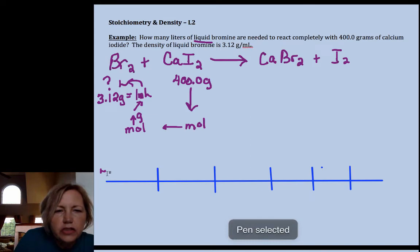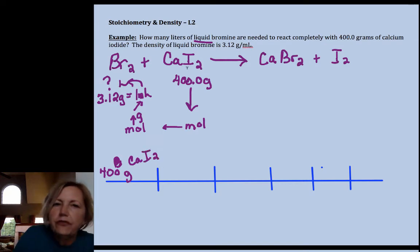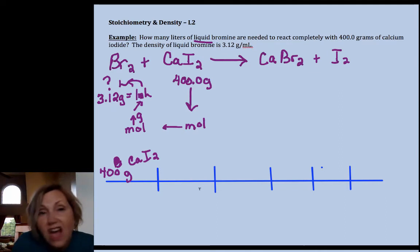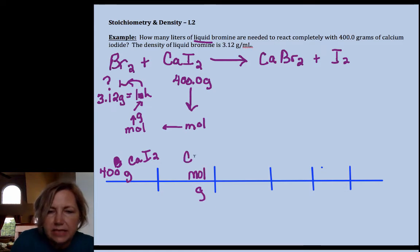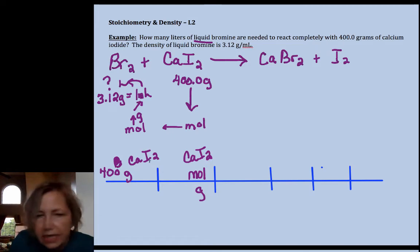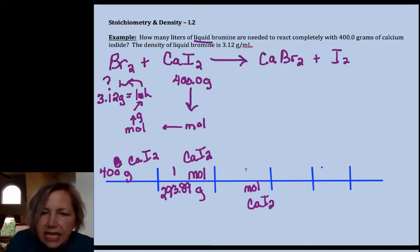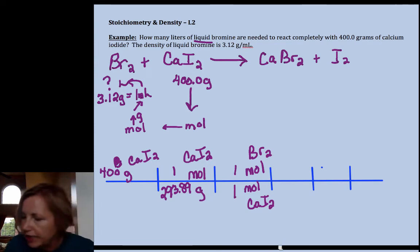Okay, so I have 400 grams of calcium iodide. Whenever you're going from one substance to another substance, you'll get lost. It's like driving through a neighborhood with no street signs. So I'm going to moles of calcium iodide. The molar mass of calcium iodide is 293.89. And then I want to eliminate moles of calcium iodide and go to moles of bromine. And it happens to be a one to one mole ratio. I do require my students to show one to one mole ratios.